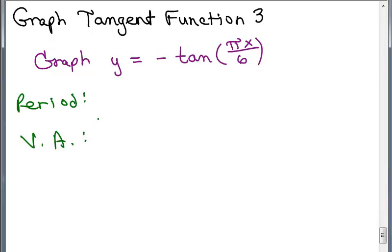Keep in mind the vertical asymptotes are always x equals something. So how do you get the period?